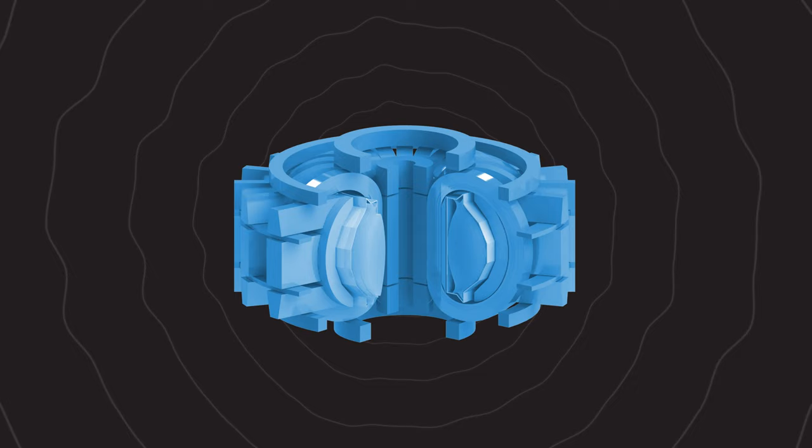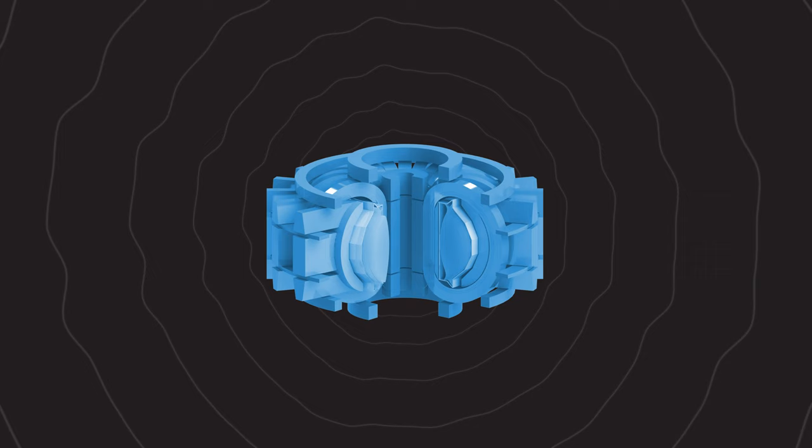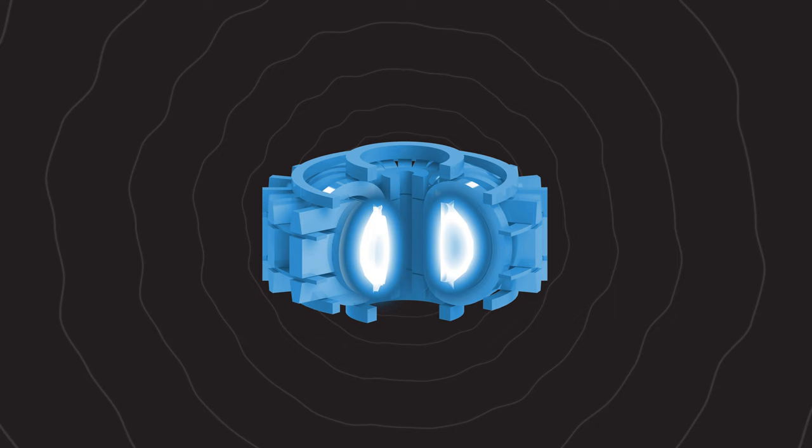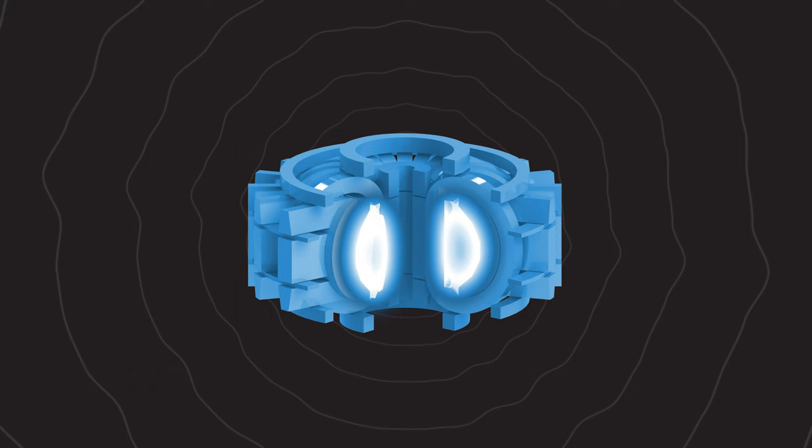Most tokamaks and stellarator fusion experiments have been built using electromagnets wound with traditional electrical conductors, such as copper. Copper electromagnets work great for fusion experiments that last for short time durations, but they are limited in operating time because copper can get very hot very quickly when running at high current. In order to scale up from short, pulsed fusion experimental devices to longer run times needed for fusion power systems, a new type of electromagnet is needed, and this is where the superconductor comes in.